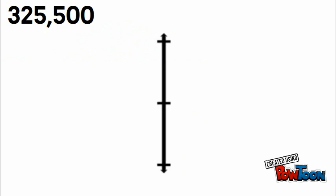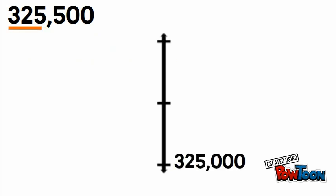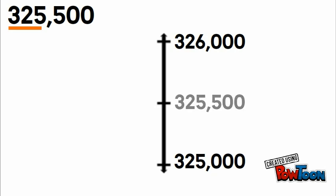Three hundred twenty-five thousand five hundred — we're rounding to the nearest thousand. We include everything up to the thousands, so three hundred twenty-five thousand is our lower estimate. Our upper estimate is one more, so three hundred twenty-six thousand. Our midpoint is three hundred twenty-five thousand five hundred.